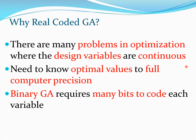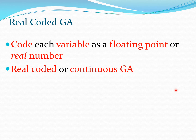Binary GA requires many bits of code to represent each variable — essentially every variable is put into a string of ones and zeros. In real coded GA, we represent each variable as a floating point or real number, keeping the design variable as it is. This is also known as continuous GA, and I will sometimes refer to it simply as real GA.